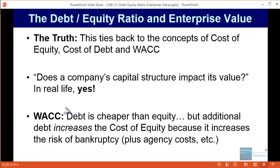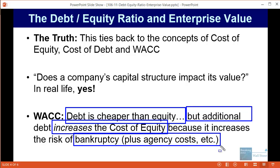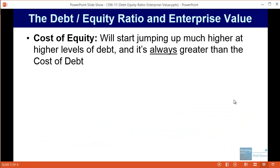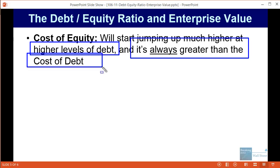The truth is that when you're looking at a company's capital structure, debt is cheaper than equity. But adding more debt will actually increase the cost of equity, because by adding more debt the company has a higher chance of going bankrupt. There are agency costs, tax effects, and a lot of other things that impact this, so it's not as simple as assuming that debt and equity are created equal. The fact is, as you add more debt, both the cost of debt and the cost of equity will increase.